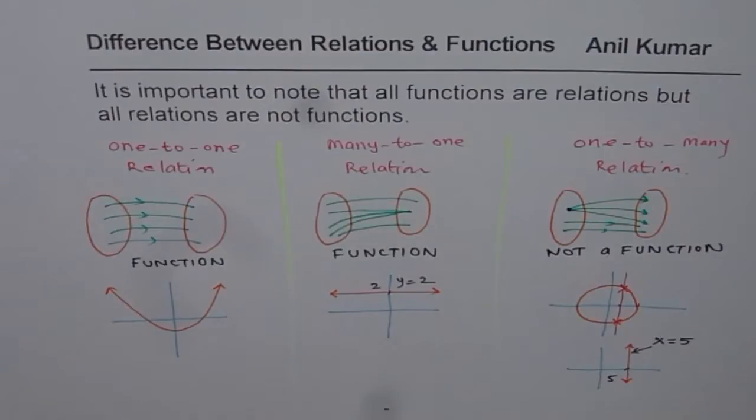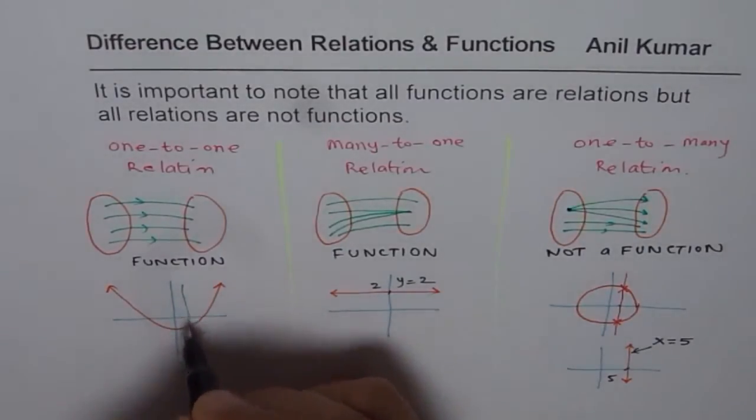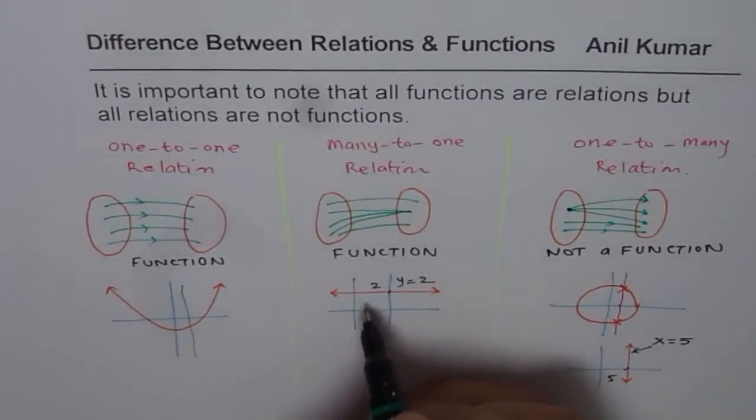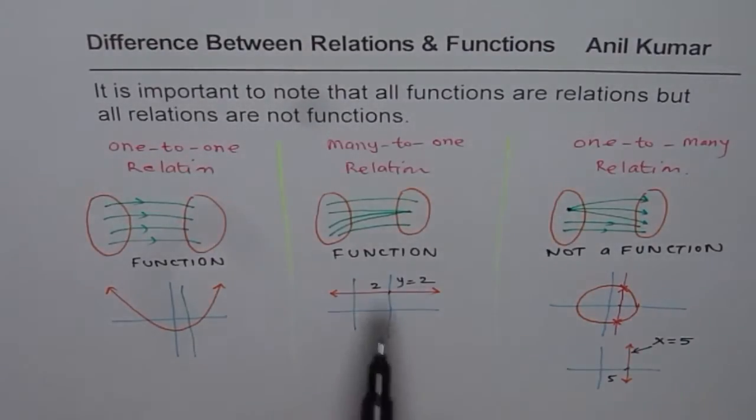Then, y equals to 2 is going to be the equation of this horizontal line. What we notice here is that, in a graph, if we draw a vertical line and if vertical line intersects only at one point, then it is a function. Vertical lines intersect only at one point, it is a function.